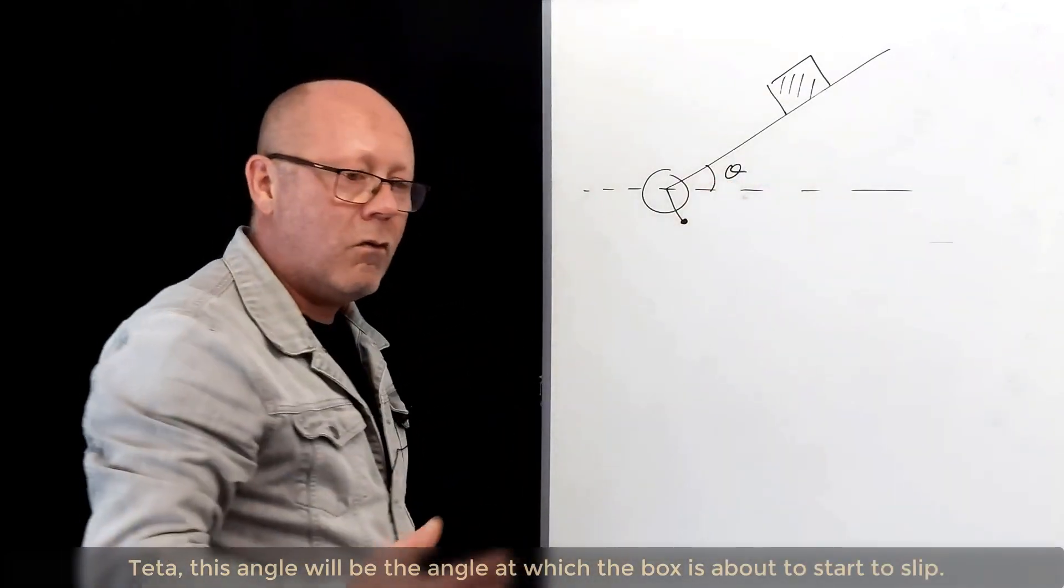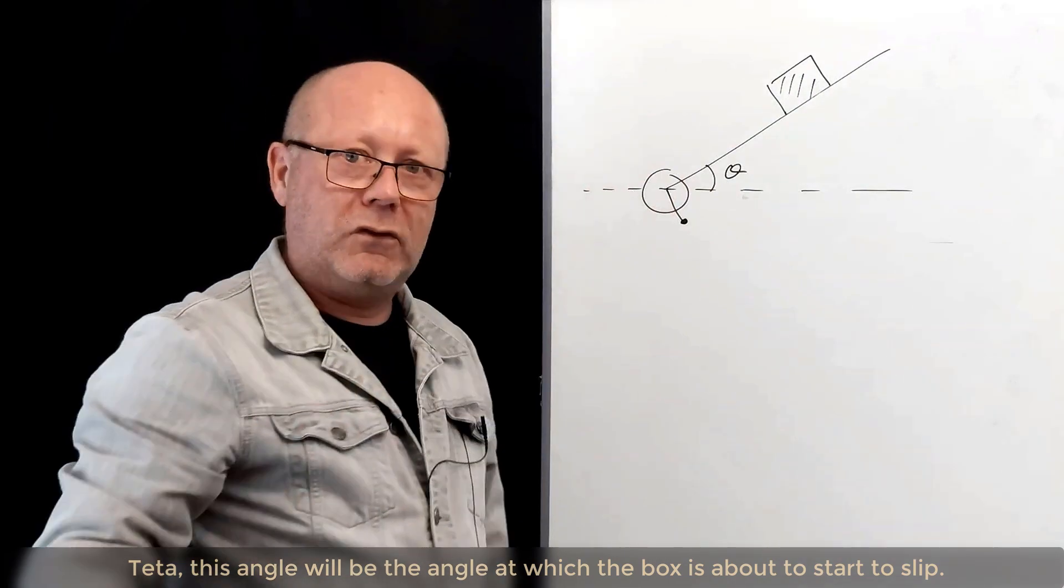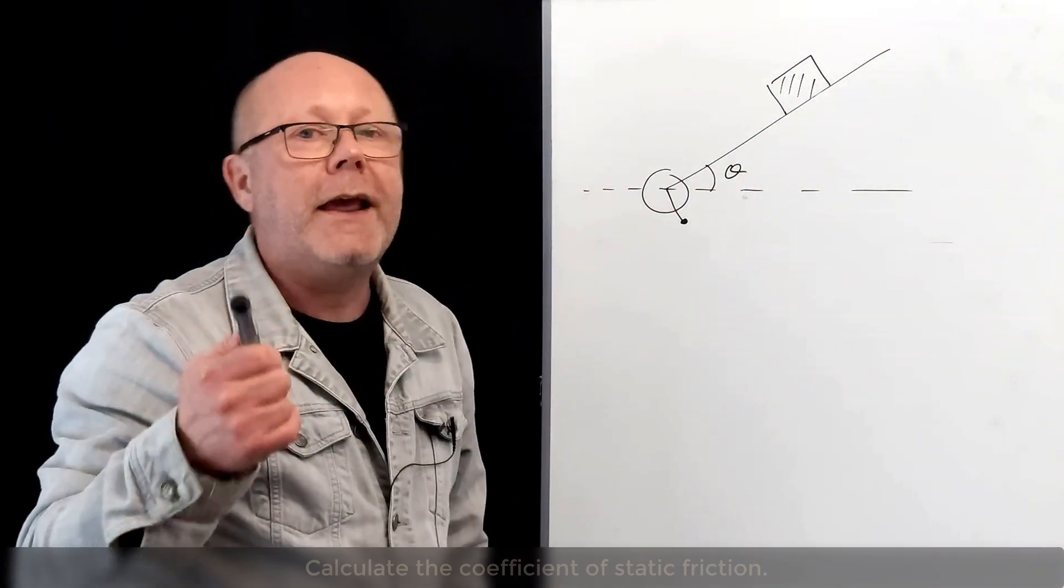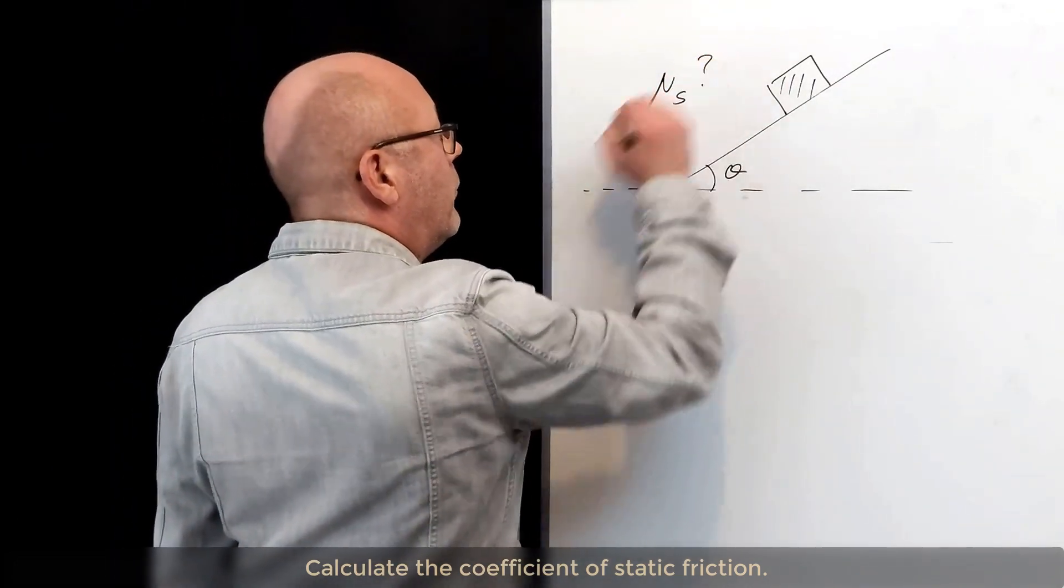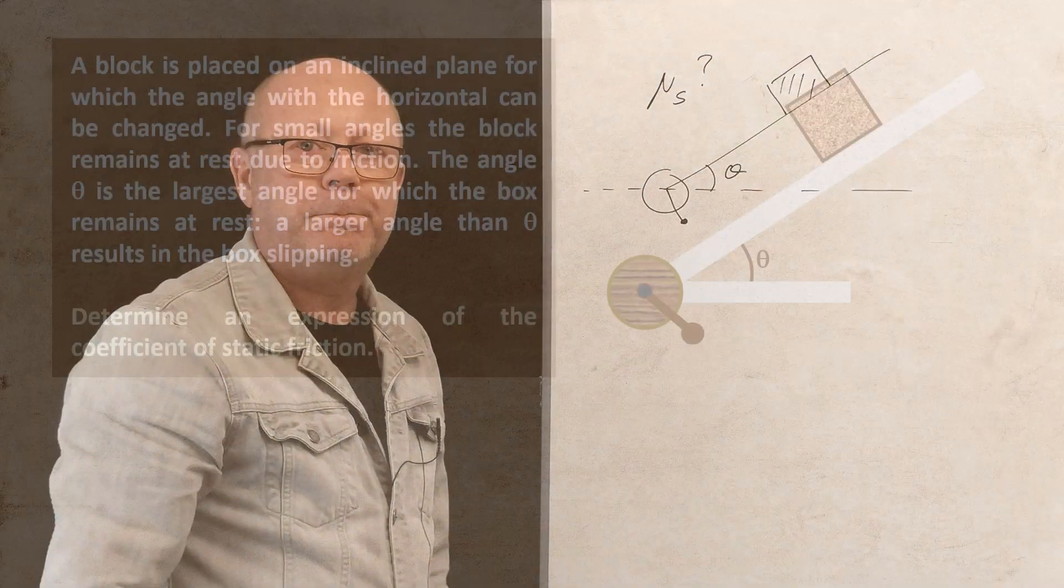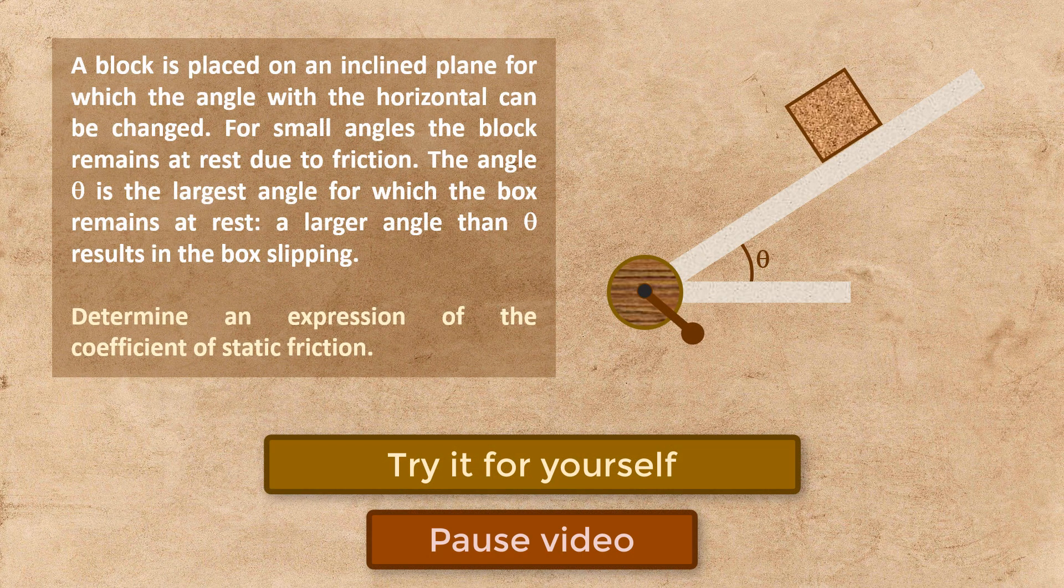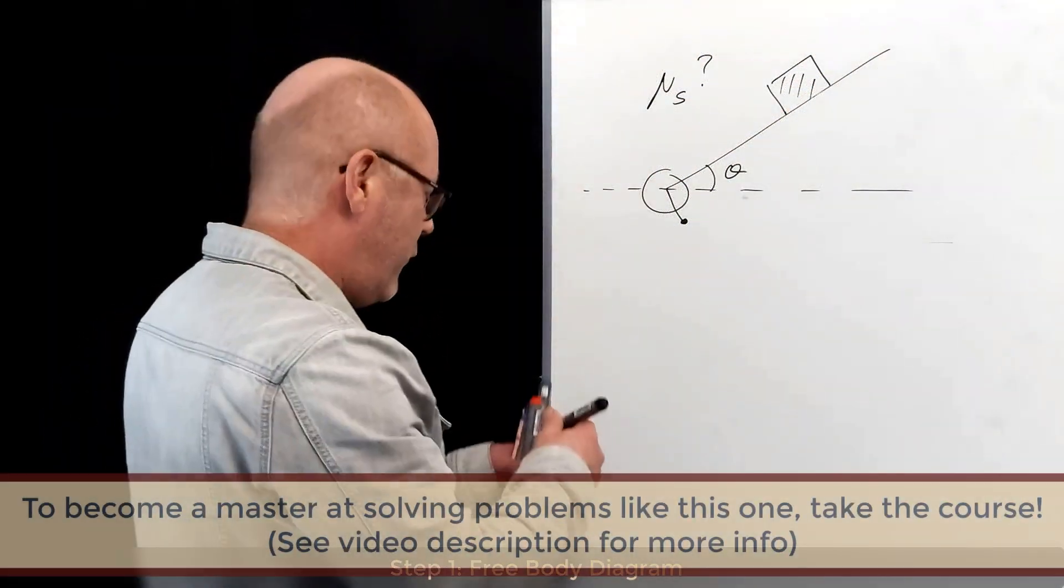So θ, this angle, will be the angle at which the box is about to start to slip. The question is, calculate the coefficient of static friction. Step number one. Free body diagram.